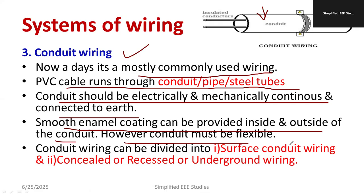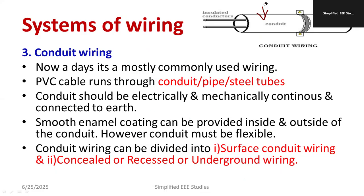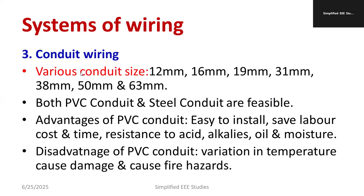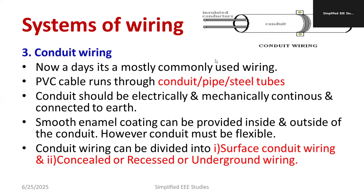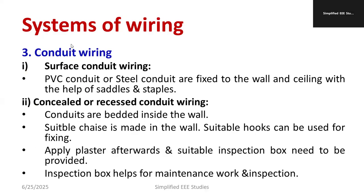Conduit wiring is broadly classified into two types: surface conduit wiring and concealed or recessed wiring. Different sizes of conduits are available — 12, 16, 19, 31, 38, 50, and 63 millimeters — chosen depending on the installation. Both PVC conduits and steel conduits are available. Advantages of PVC conduits include easy installation, saving labor cost and time, and resistance to acid, alkalis, oils, and moisture. A drawback is temperature variation, which can cause melting or damage.